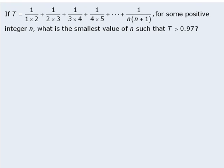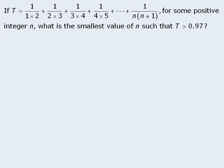In this question, we want to determine the smallest value of n such that T is greater than 0.97. To begin, notice that each term in this sum is in the form 1 over k times k plus 1.